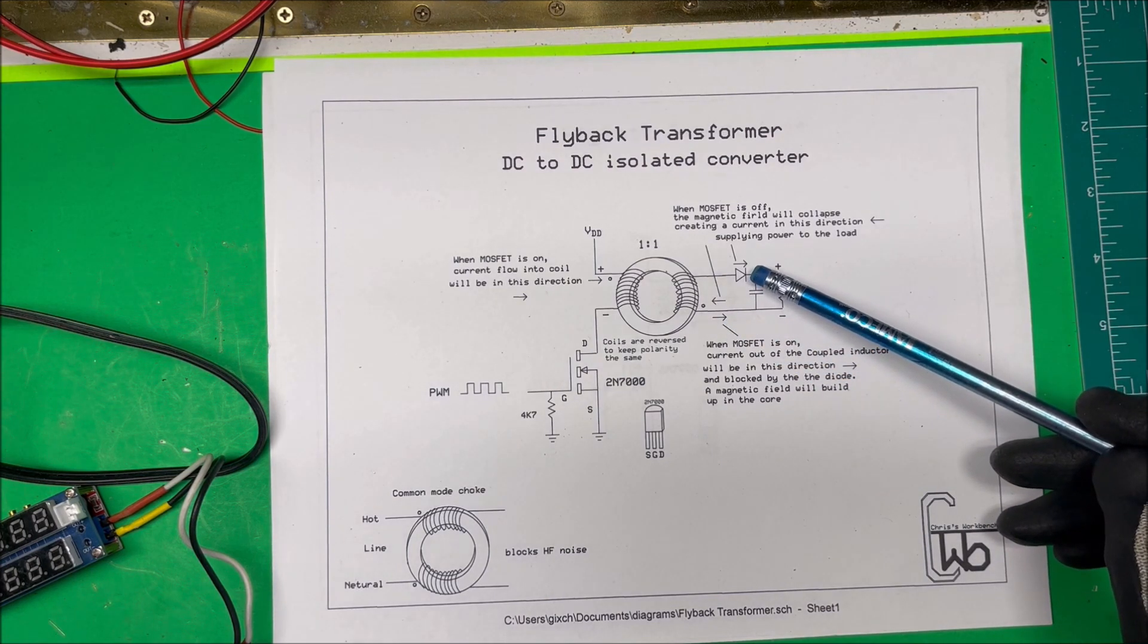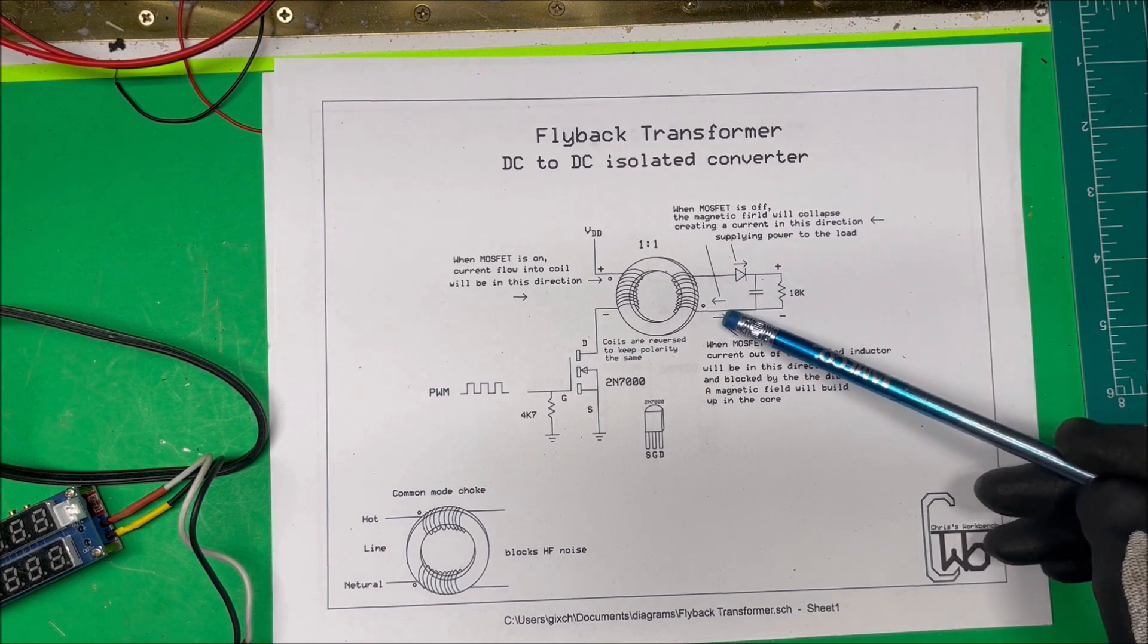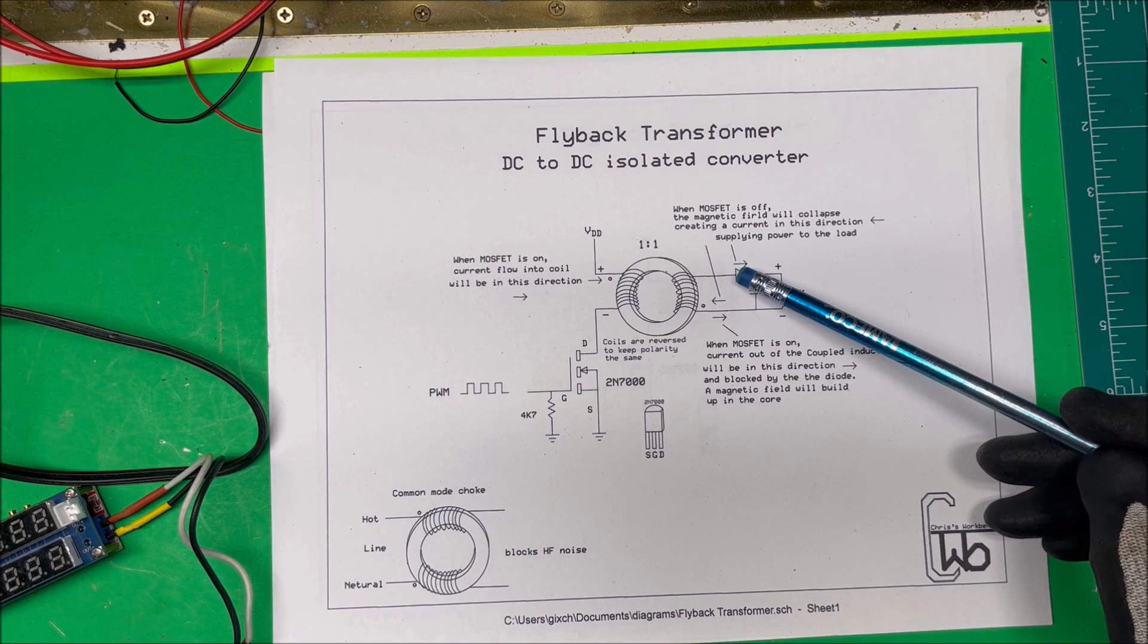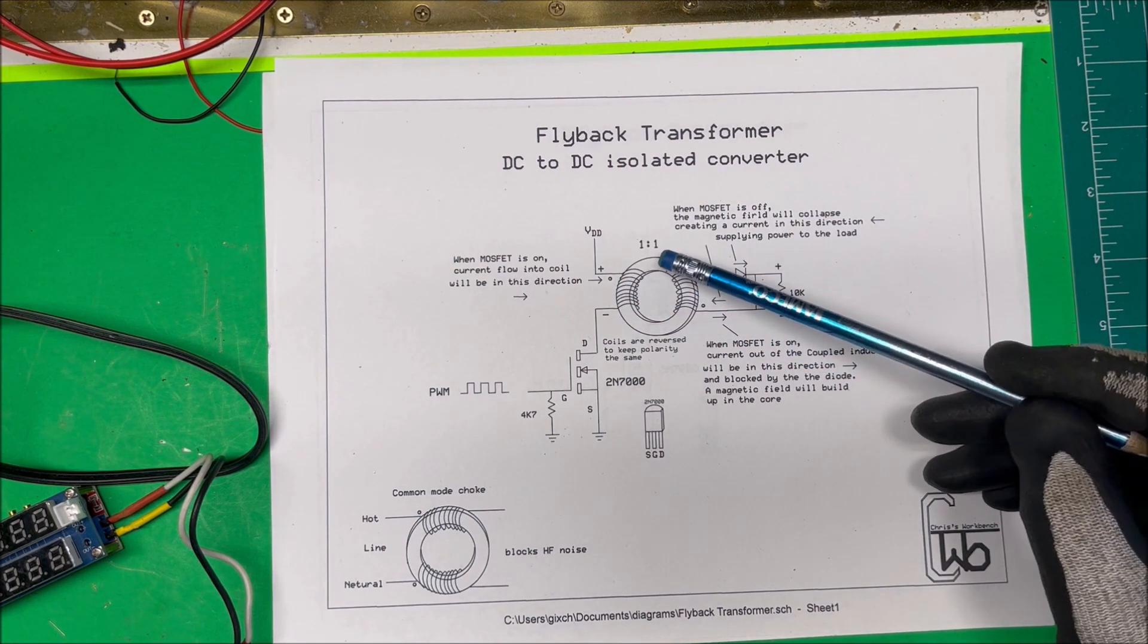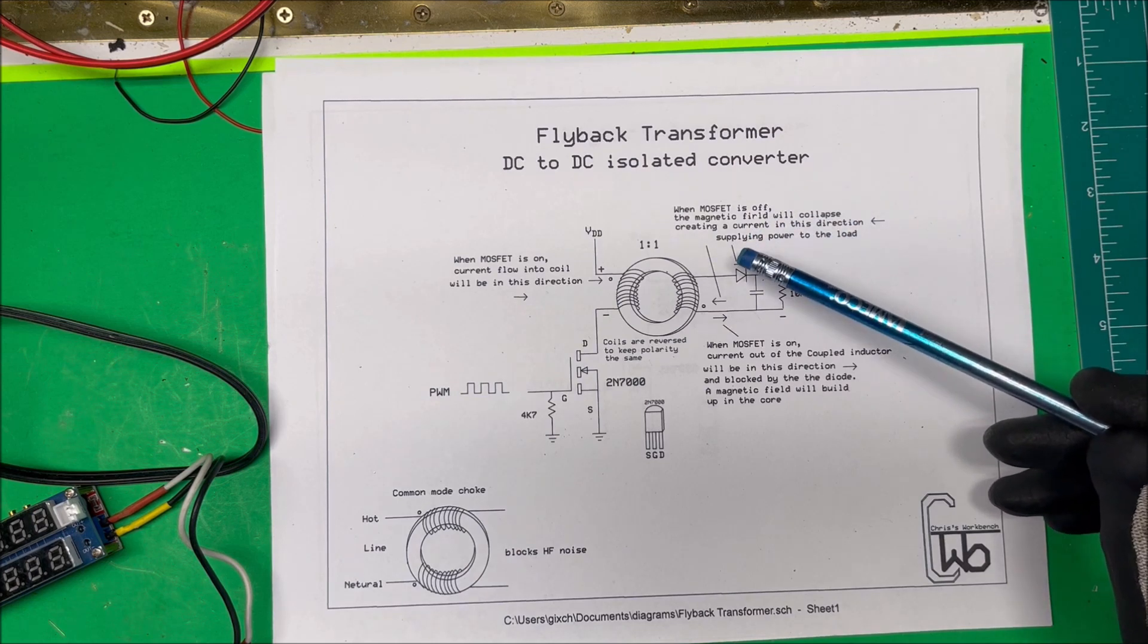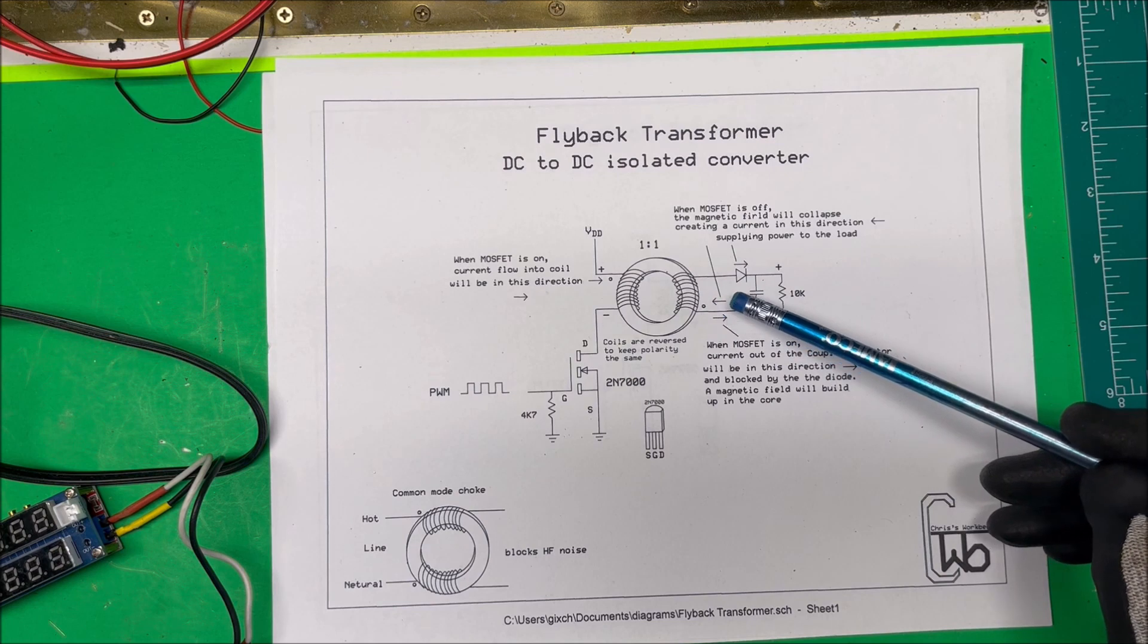But it's blocked by the diode here. It's like having an open switch here, so no current can flow. The diode is just like an open switch. The magnetic field builds up in this core, and then when the MOSFET is turned off, the magnetic field will collapse, creating the current in this direction.